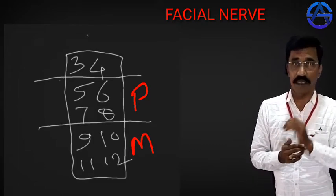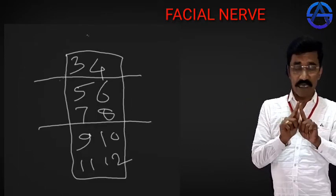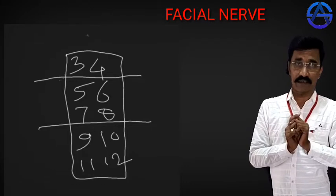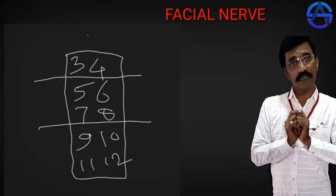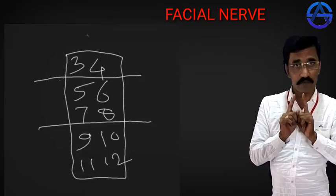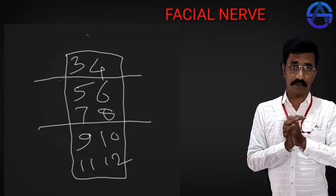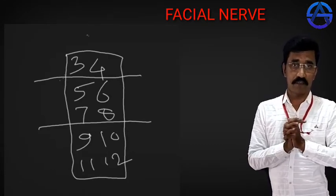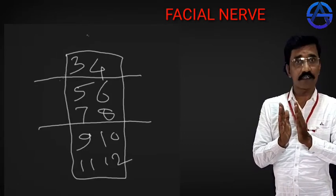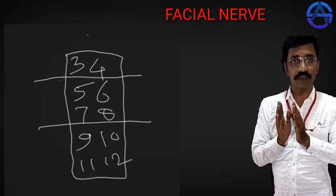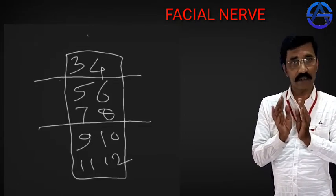The facial nerve nuclei and the nucleus of the sixth cranial nerve — the abducent nucleus — are aligned side by side.